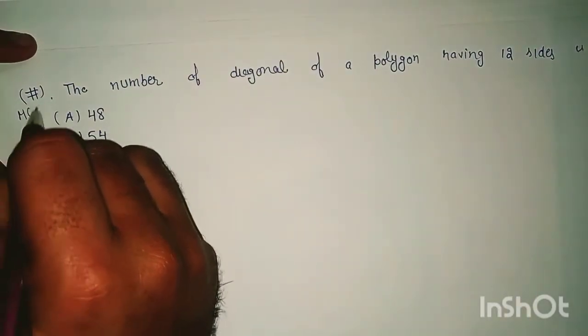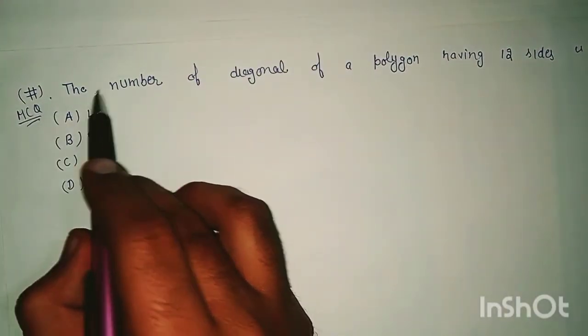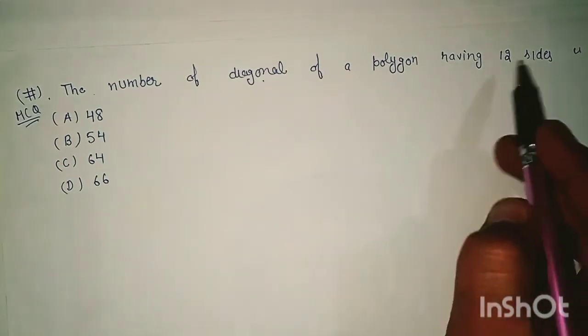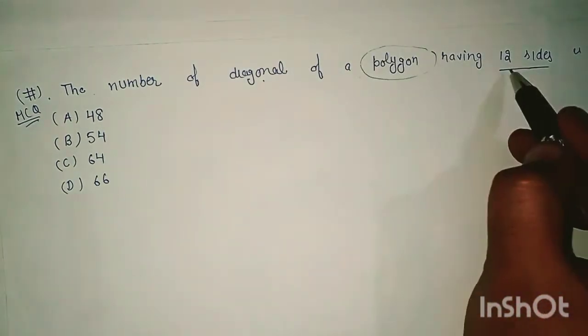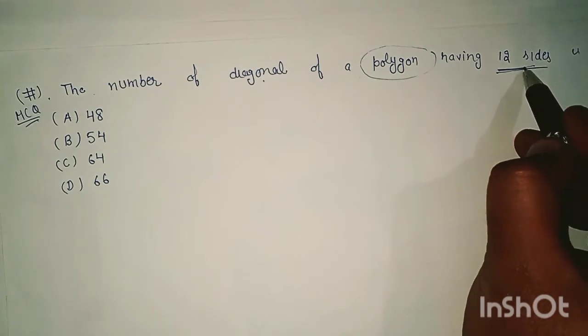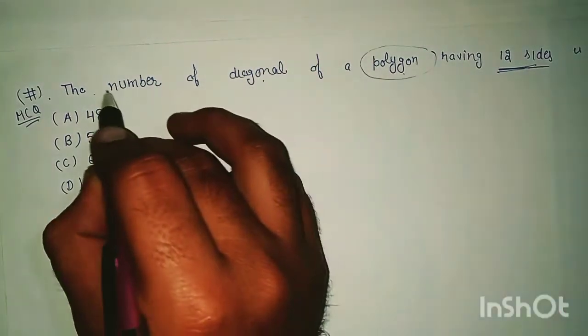Let's see the next MC. The number of diagonals of a polygon having 12 sides. If you have a polygon with 12 sides, then we will find the number of diagonals.